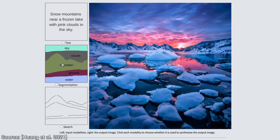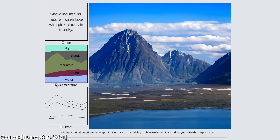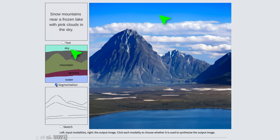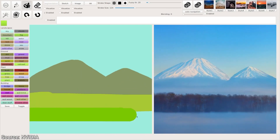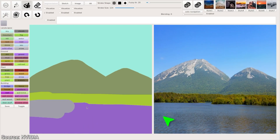Or, we can create a segmentation map — this tells the AI what things are. The sea is down there, mountains and sky up here. Looking great. But this has been done before too. For instance, NVIDIA's previous Gaugan paper could do this too. Nothing new here. Yet.